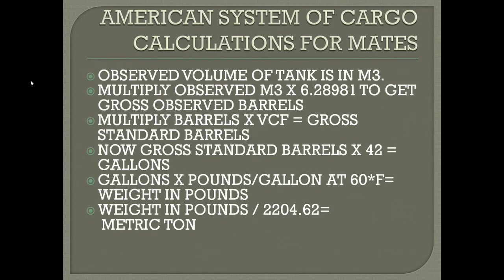Now gallons multiplied by pounds per gallon — which will be provided to you by the surveyor at 60 degrees Fahrenheit — will give you a weight in pounds. Now divide the weight in pounds by 2204.62 to get your metric tons.